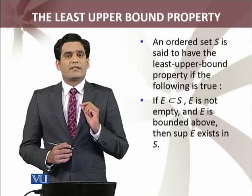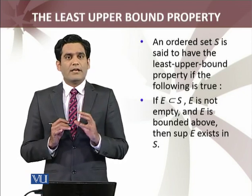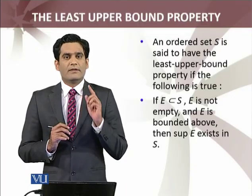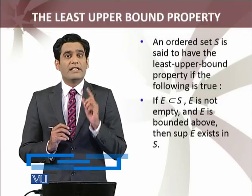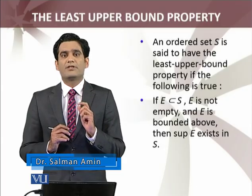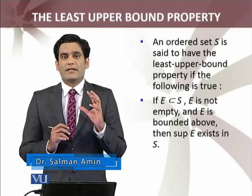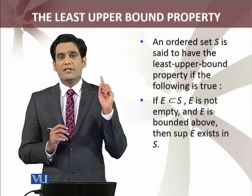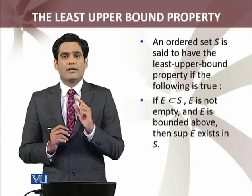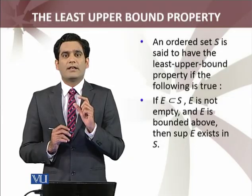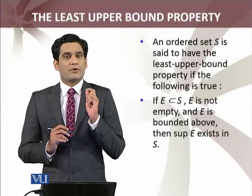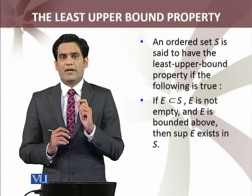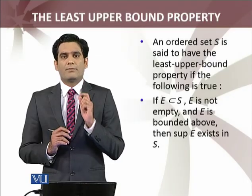So we have an ordered set. If any subset E of that ordered set is bounded above, then the supremum — which is the least upper bound — of that set exists. If the least upper bound (supremum) belongs to that set for any bounded above subset, then we say this ordered set satisfies the least upper bound property.